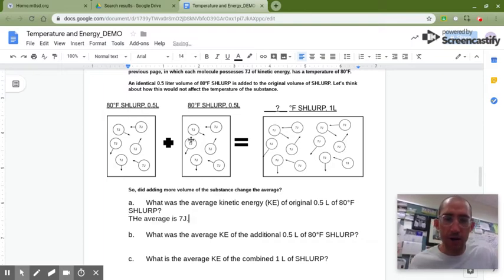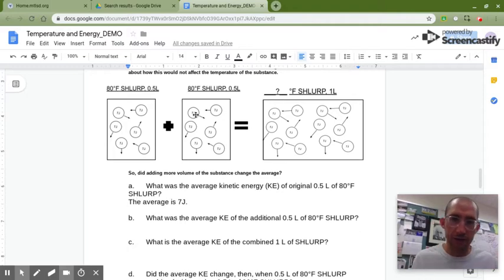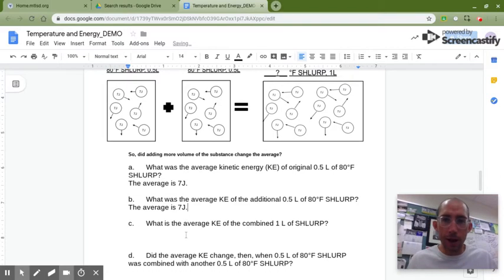Then we combine it with another half a liter of 80 degrees Fahrenheit shlerp. Each molecule in that volume has seven joules of kinetic energy, so the average of it is seven joules. Combine them together to make a full liter.